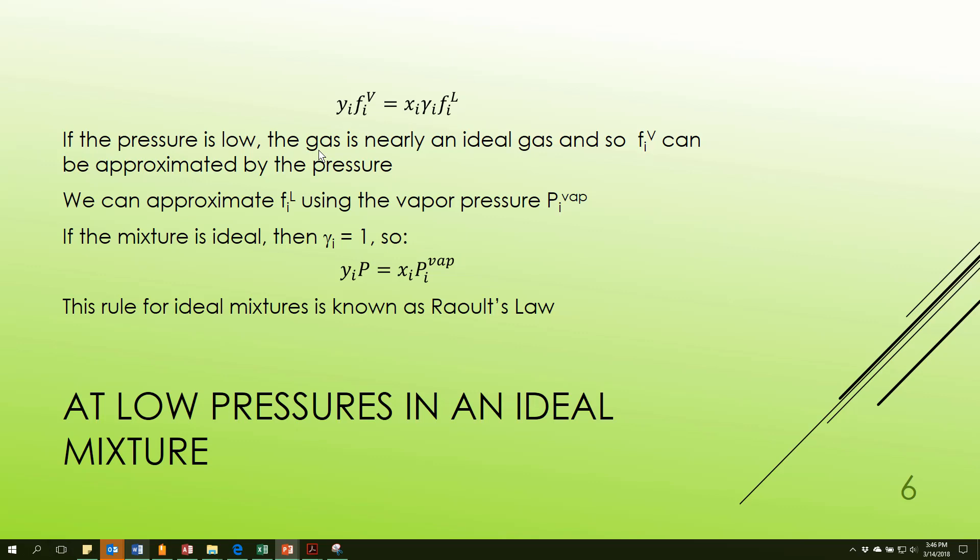Let's take the pressure so low that the gas is virtually an ideal gas. And in that case, f_i for the vapor could be approximated using the pressure of the system. If I have an ideal system, gamma will go to 1, and f_i for the liquid can be approximated using the vapor pressure of the pure material. And so based on this, I end up with this simplification which is known as Raoult's Law. Now it's going to be acceptable when I have molecules that are very much alike, very much of the same size, very similar in energy levels. We're going to improve upon this soon, but this is a way to get us started in the game of how to solve problems.